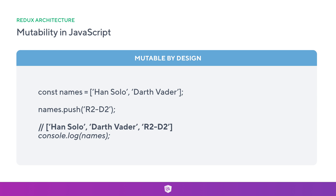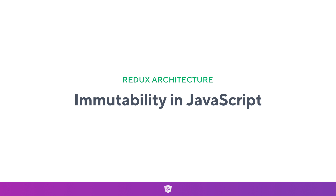Looking at a second example: we have const names with two string values. We can call names.push to push a new value in, and when we log it out we have three values. The names array has been updated just by using the push method on the array prototype. This may be problematic because arrays are in fact objects and are passed by reference just like a JavaScript object.